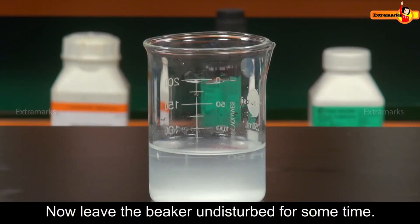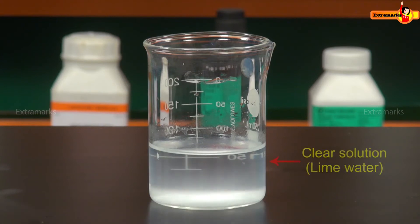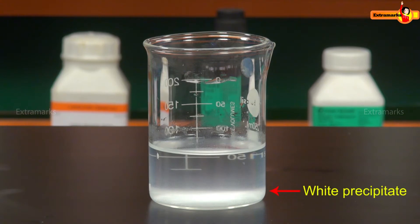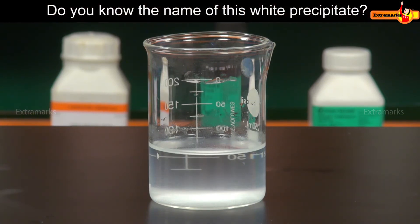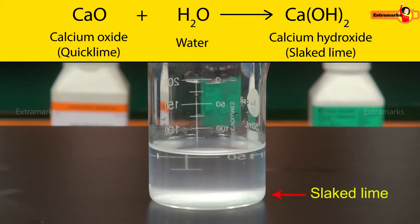Now, leave the beaker undisturbed for some time. You will notice a clear solution of lime water is formed as the white precipitate settles down at the bottom of the beaker. Do you know the name of this white precipitate? It is slaked lime.